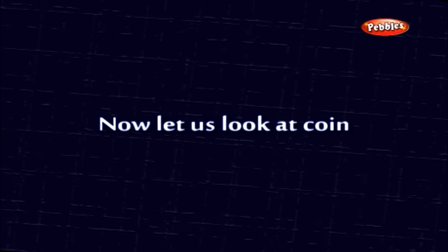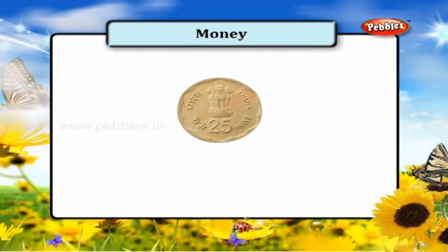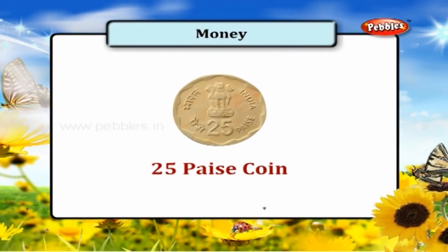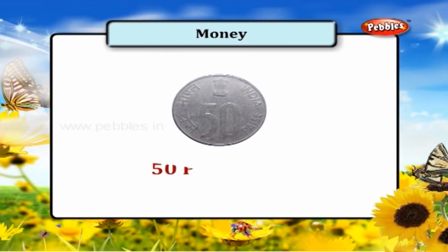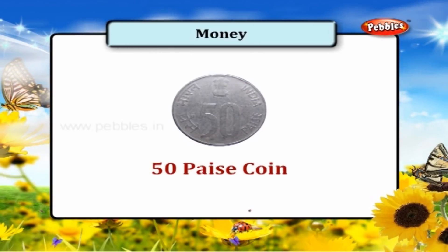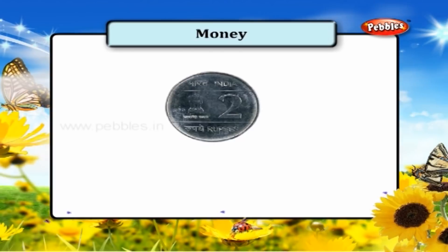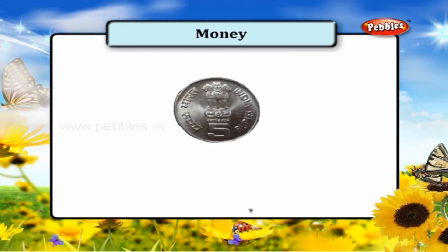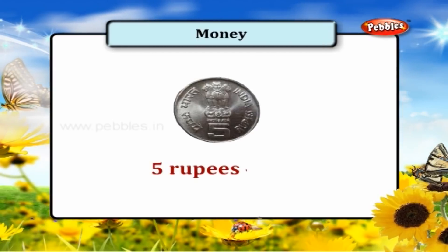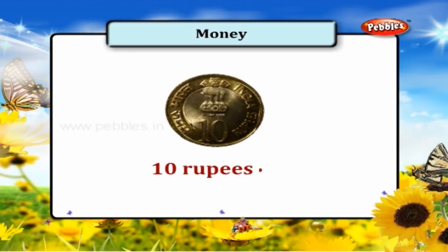Now, let us look at coins. This is a 25 paisa coin. This is a 50 paisa coin. This is a 1 rupee coin. This is a 2 rupee coin. This is a 5 rupee coin. And this is a 10 rupee coin.